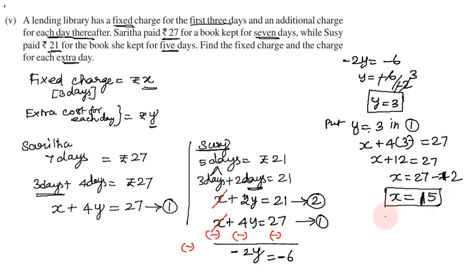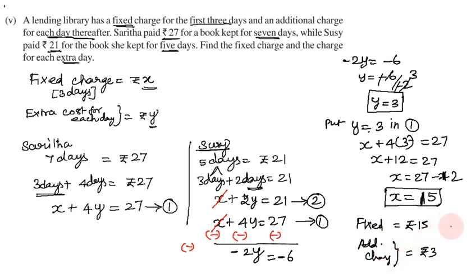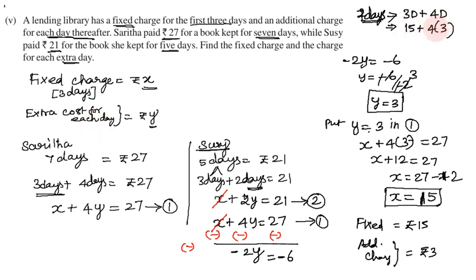The fixed charge is 15 rupees and the additional charge per day is 3 rupees. To verify: for 7 days, fixed charge is 15 rupees for the first 3 days plus 4 extra days at 3 rupees each, giving the correct total. The answer is confirmed correct.